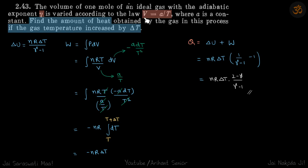We have a gas that undergoes a process which is given as V is equal to A by T. We need to find the amount of heat obtained if the gas temperature increases by delta T amount. So V is given as a function of temperature, and we are given that eventually the gas temperature increases by delta T, and we need to find the heat.